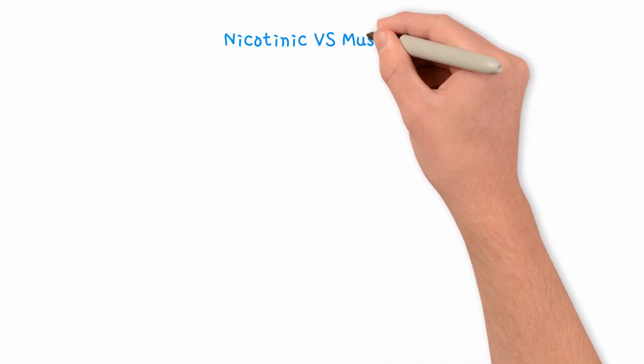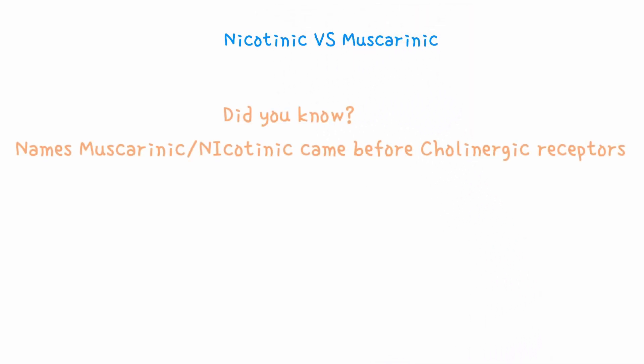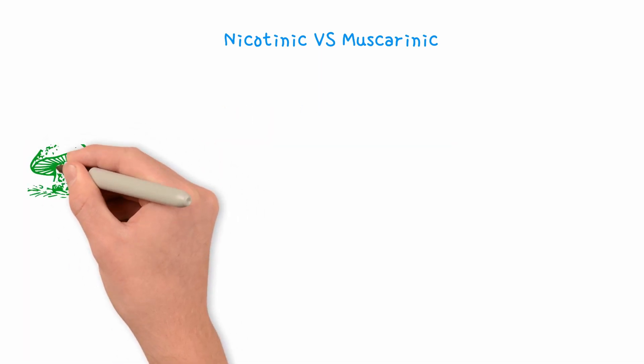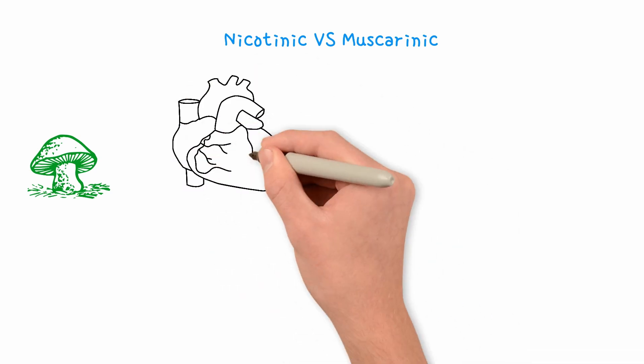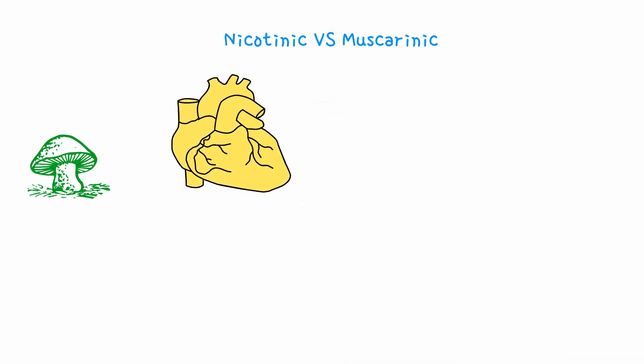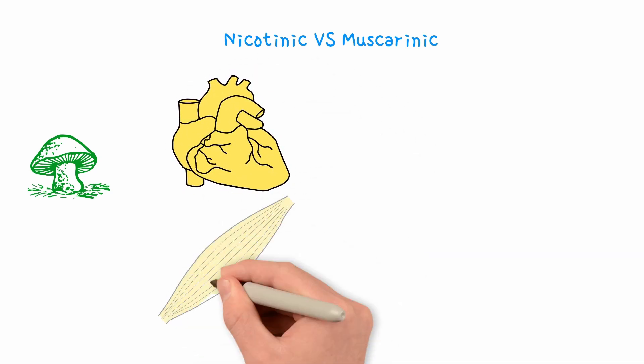Nicotinic versus muscarinic. Did you know the names muscarinic and nicotinic came before we even found out they are cholinergic receptors? Pharmacologists found that the alkaloid muscarin from mushrooms mimicked parasympathetic effects like slowing the heart. But it did nothing to skeletal muscle.